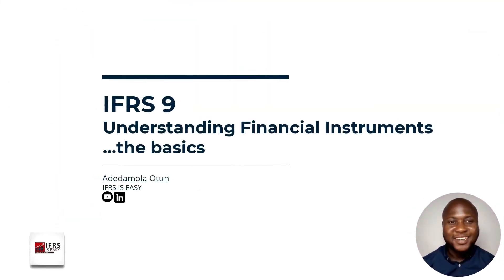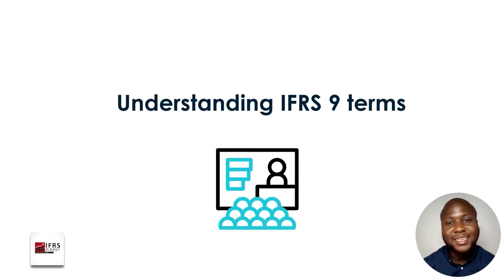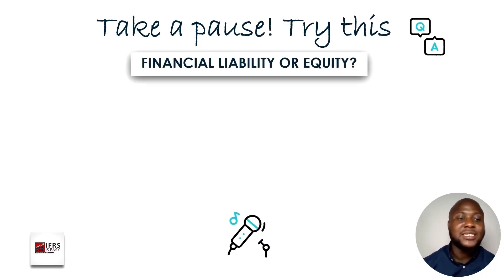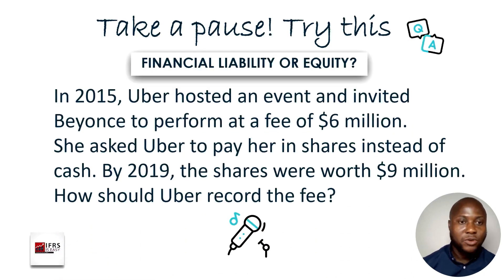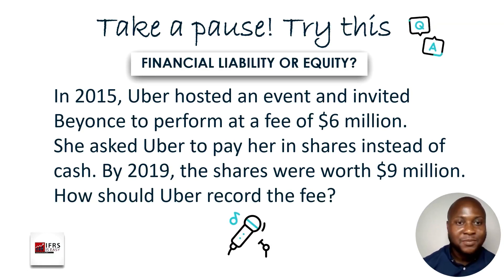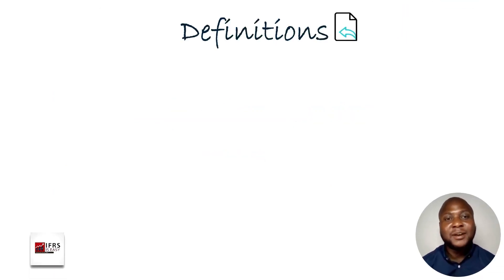Hello, welcome back. We'll be continuing with our IFRS 9 series, understanding the basics. What we're doing now is moving on to understanding IFRS 9 in terms of definitions and how to properly identify financial instruments — whether financial assets, financial liabilities, or equity. Before we start, I'd like you to go through this and come back to it later to see if we have the correct answers after we complete this section.